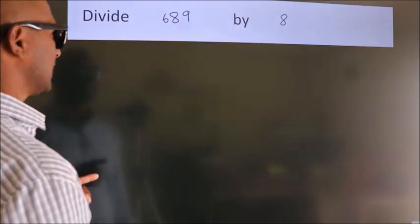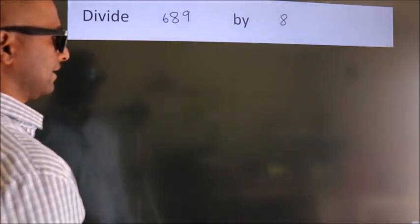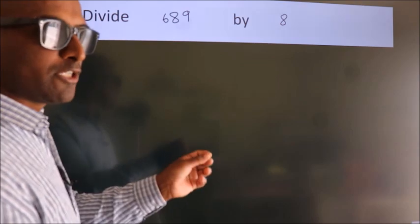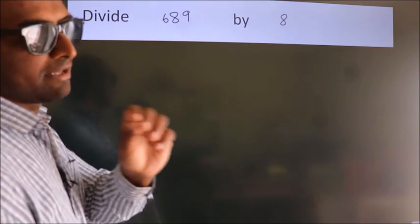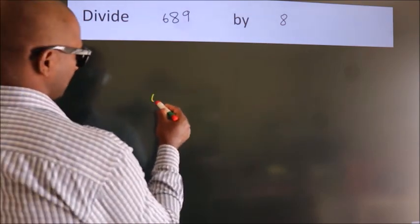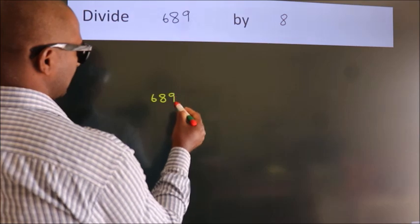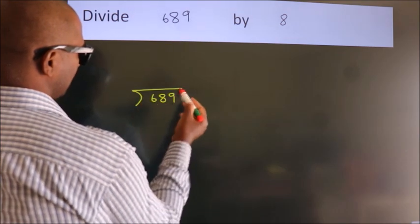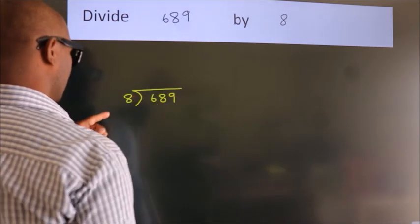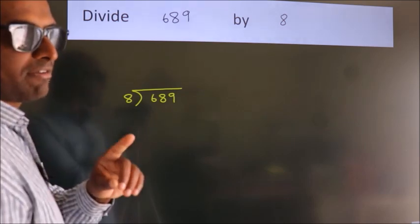Divide 689 by 8. To do this division, we should frame it in this way: 689 here, 8 here. This is your step 1.